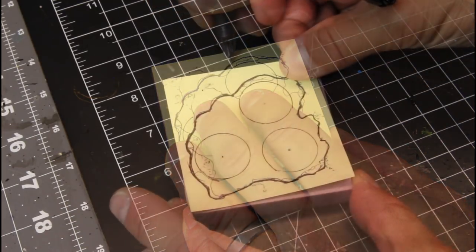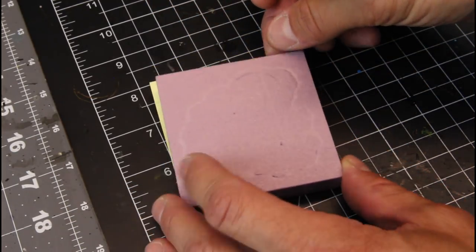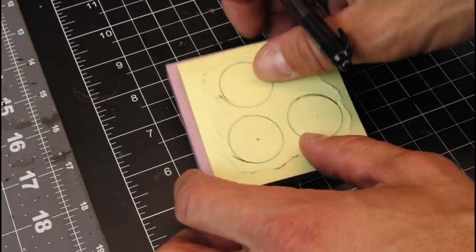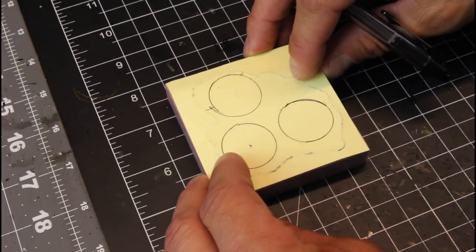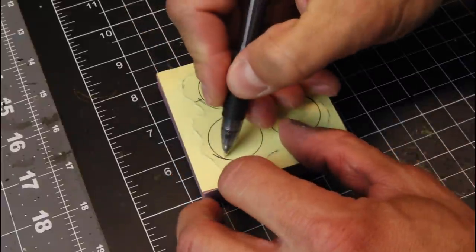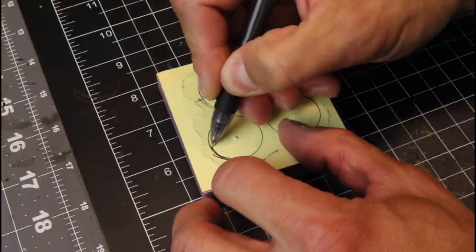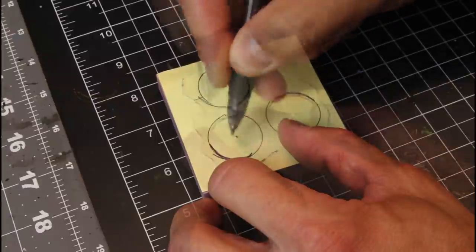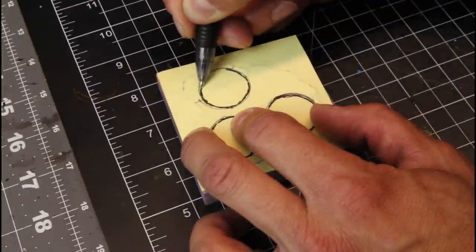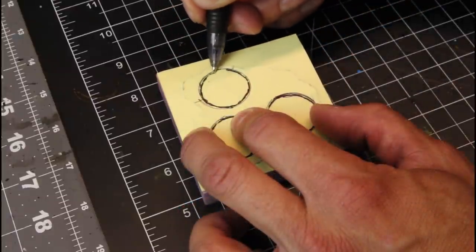Now simply by doing that little maneuver with the post-it note, we now have the location on the bottom of this foam where we need to cut in our round miniature bases for our diodes. And just press those nice and hard right into the base. That way you can see those when you're done and we can cut those out.